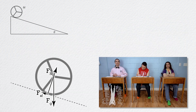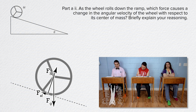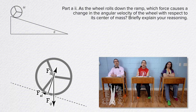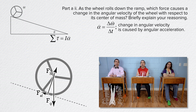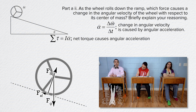Part A double-i: as the wheel rolls down the ramp, which force causes a change in the angular velocity of the wheel with respect to its center of mass? Angular acceleration equals change in angular velocity over change in time, so change in angular velocity is caused by angular acceleration. The rotational form of Newton's second law states that net torque equals rotational inertia times angular acceleration, meaning the angular acceleration of the wheel is caused by a net torque. Therefore, the force which causes a net torque about the center of mass is the one that causes the change in angular velocity.